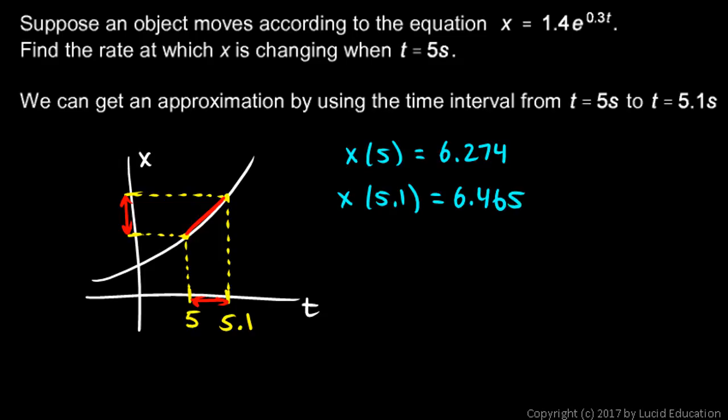And then we calculate the slope, the rise over the run. Well, the rise is going to be the difference in those two values, the 6.274 and the 6.465. So our delta x over delta t is going to be the slope, the rise over the run. So that'll be 6.465 minus 6.274 over the run, and you can see the delta t, the time interval there, is 0.1. And we do the calculation, and it comes out to 1.91. Now that's not exactly the slope at 5, but it's a decent approximation.